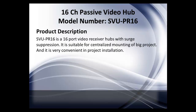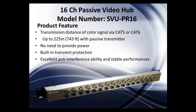Next is the 16-channel passive hub, model number SVU-PR16. The SVU-PR16 is a 16-port video receiver hub with surge suppression, suitable for centralizing mounting of large projects, and convenient for project installation. I also want to point out that on all the Valex hubs there are two screw holes on each side — these allow you to mount any Valex hub into a rack mount server, so you can easily add the hub into your rack mount system alongside a Valex DVR. They are rack mountable.